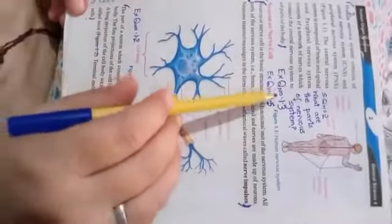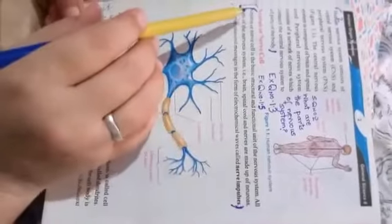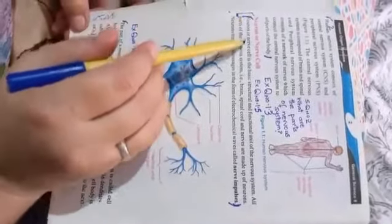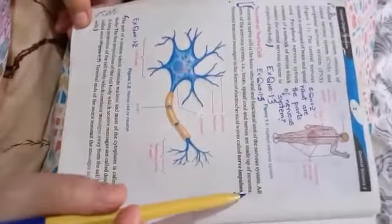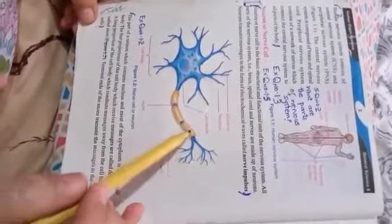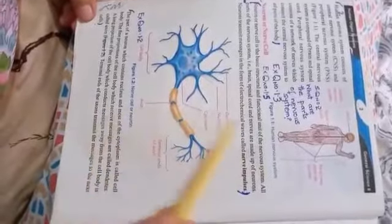For question number 1.3, the answer will start from neuron or nerve cell is the basic structural and functional unit of nervous system. Up to this. And this diagram will be included in both the answers.